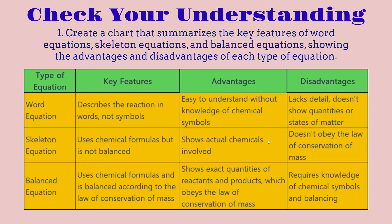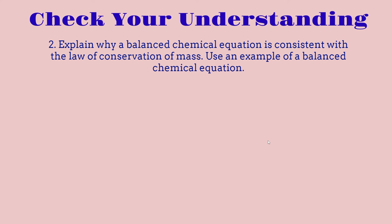For disadvantages: the word equation lacks detail and doesn't show quantities or state of matter. The skeleton equation doesn't obey the law of conservation of mass. And the balanced equation requires knowledge of chemical symbols and balancing. This summarizes question number 1, which is creating the table for the different types of equations.